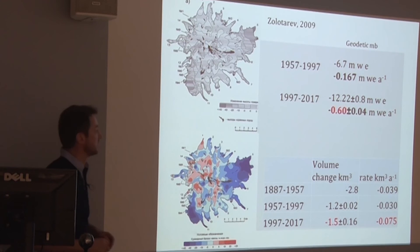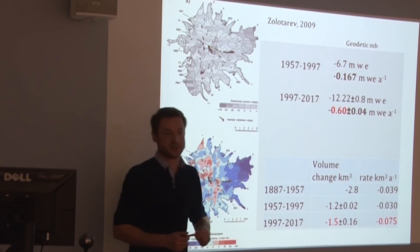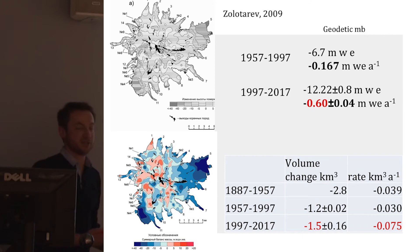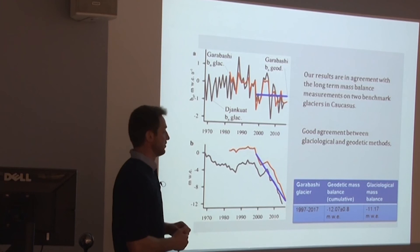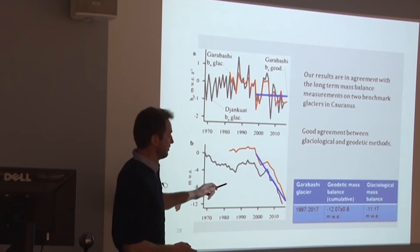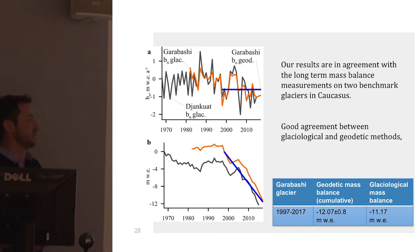When we compare to previous results, we actually see an increase in negative mass balance compared to previous decades by three times — the mass loss rate tripled compared to the second half of the 20th century, just in the recent 20 years. We also compared our geodetic results to the glaciological mass balance, and it fits quite well — almost identical, with about one meter difference over 20 years, well within the uncertainty range.